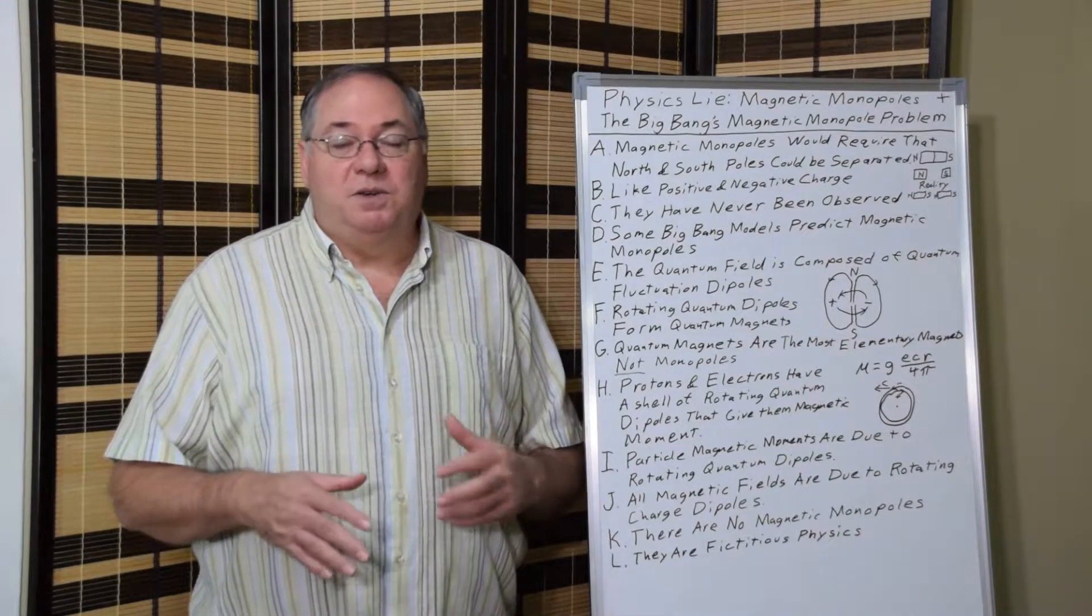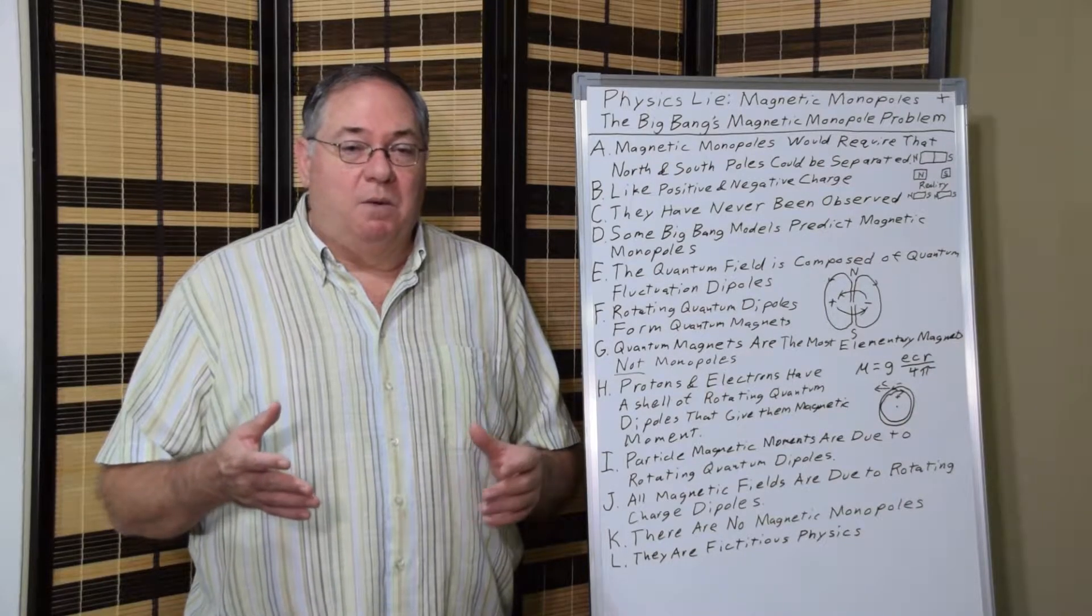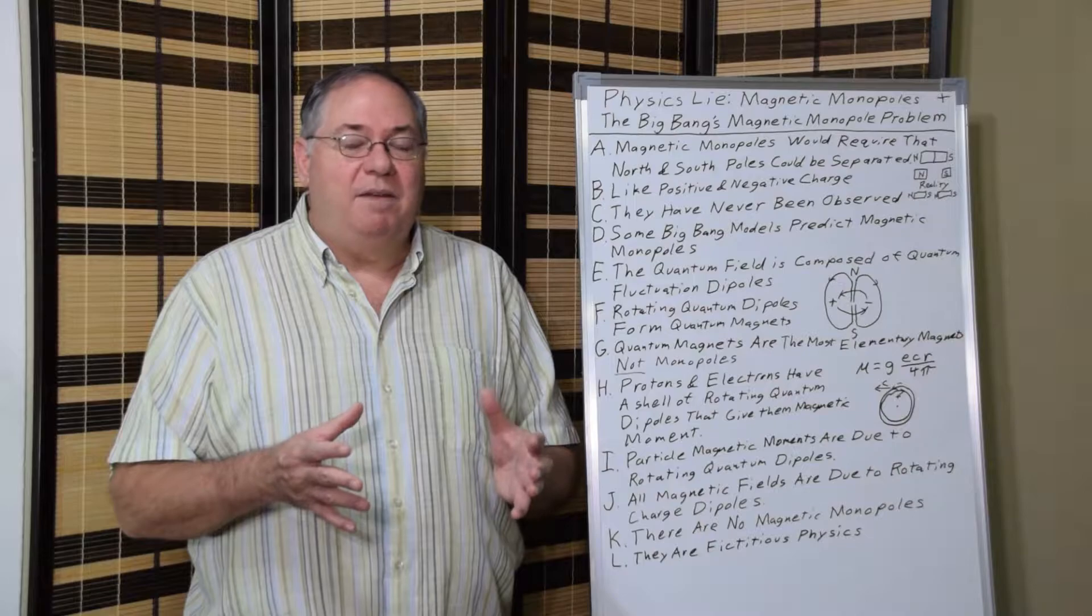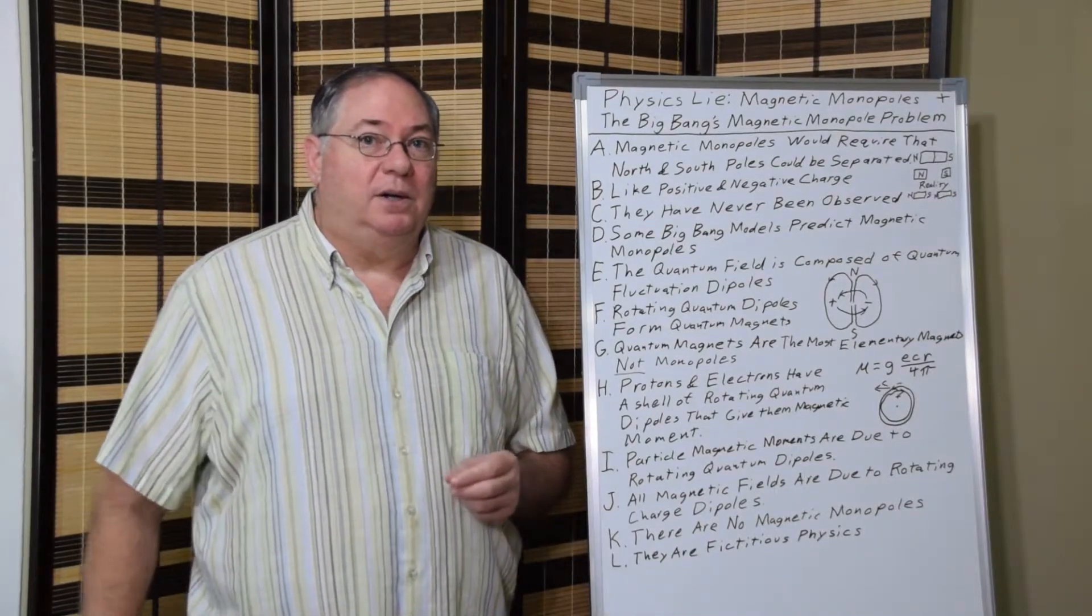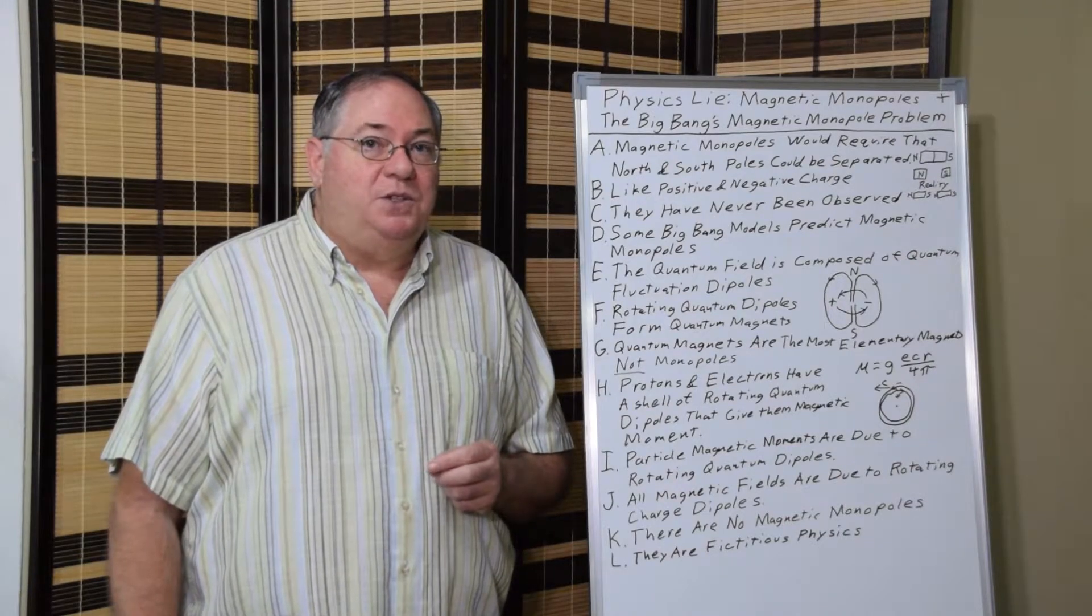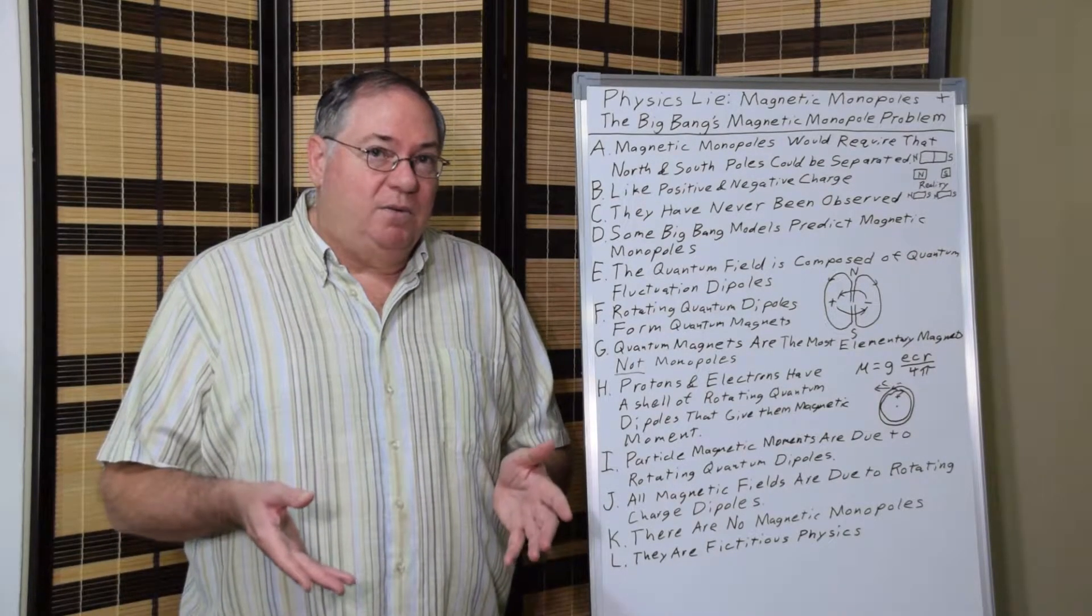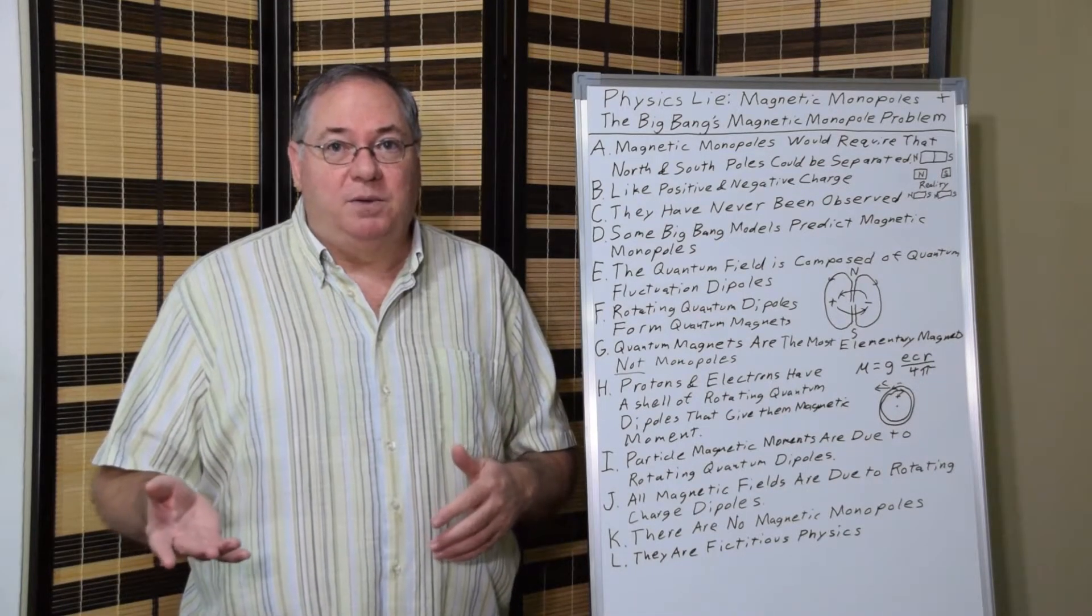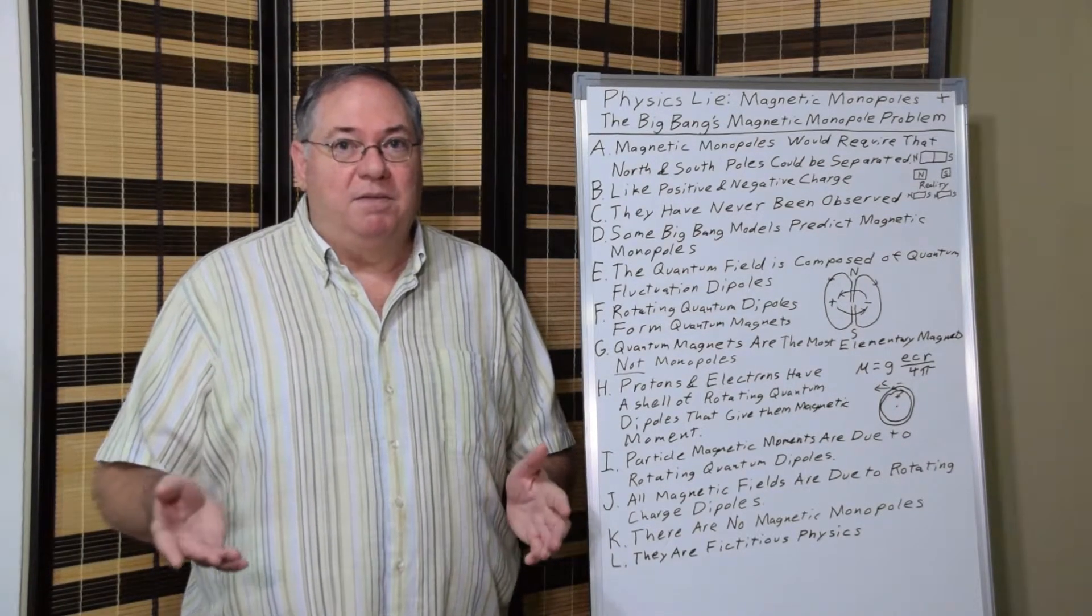And there are also versions of the Casimir force where, depending on the physical structure of the cavity, plates can be pushed apart instead of pushed together. So we know, because of these van der Waals forces, that quantum fluctuations have electric charge dipoles, at least some of them, if not all of them.